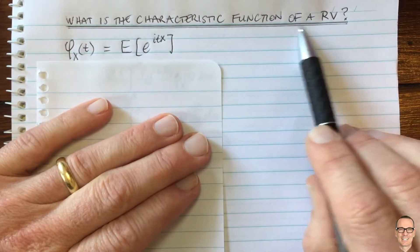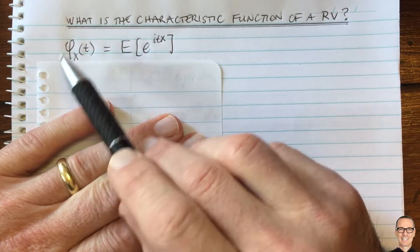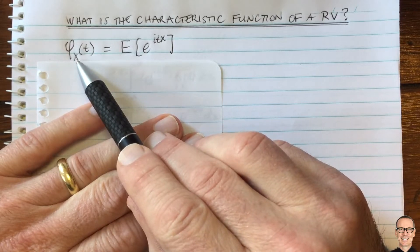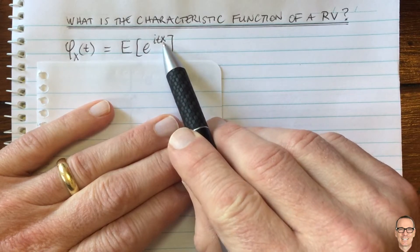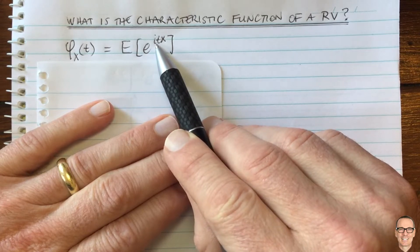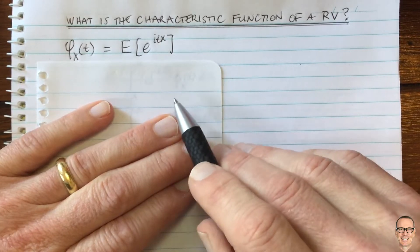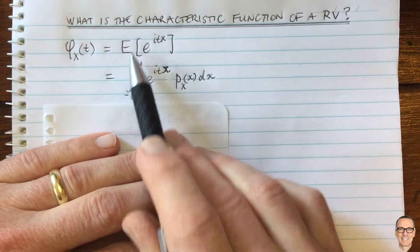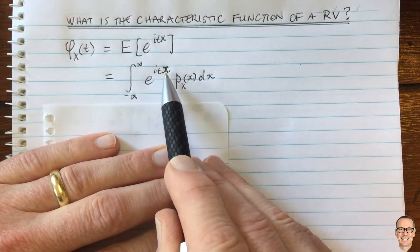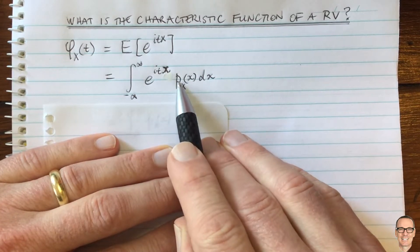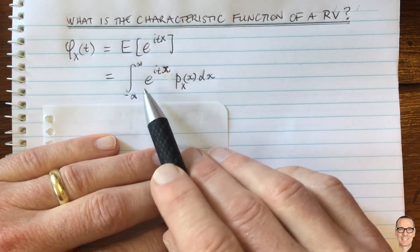So what is the characteristic function of a random variable? Here we've got the definition where we use this symbol for the characteristic function of the random variable capital X, parameterized by little t. It's defined to be the expectation of e to the power itx, where i is the complex variable. Writing out that expectation, we have the integral from negative infinity to infinity of e to the itx times the probability density function of the random variable, times dx.